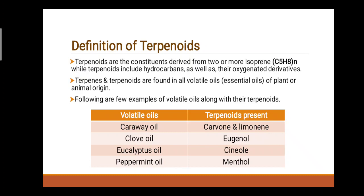Following are a few examples of volatile oils along with their terpenoids. First, volatile oils of caraway — terpenoids present: Carvone and Limonene. Second, volatile oil: Clove oil — terpenoids present: Eugenol. Third, volatile oil: Eucalyptus oil — terpenoids present: Cineol and Menthol. Fourth, volatile oil: Peppermint oil — terpenoids present: Menthol.